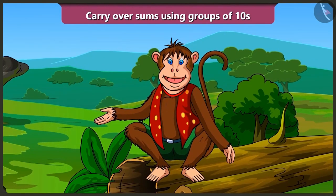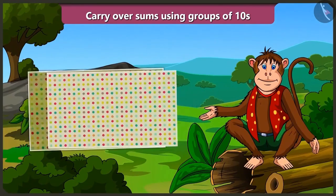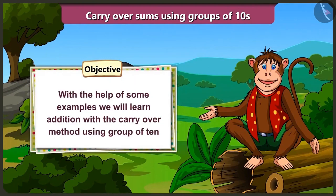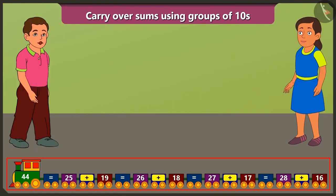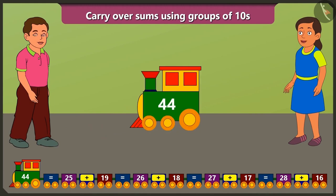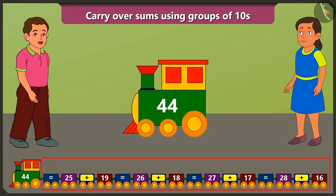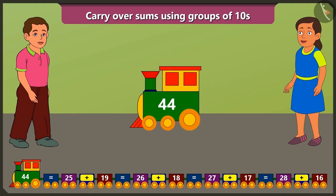Hello friends! Today in this video, with the help of some examples, we will learn addition with the carry over method using groups of tens. Look, Bubbly! What a fun train I have! But why is 44 written on the engine of your train? Because the sum of all the numbers written on the compartments of the train equals 44.